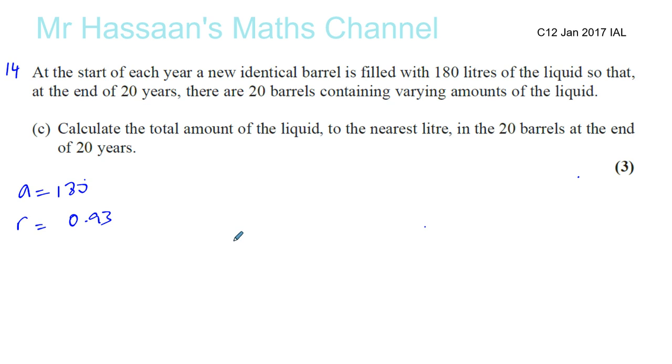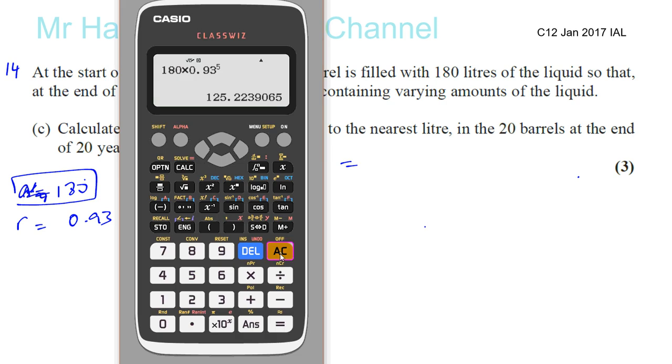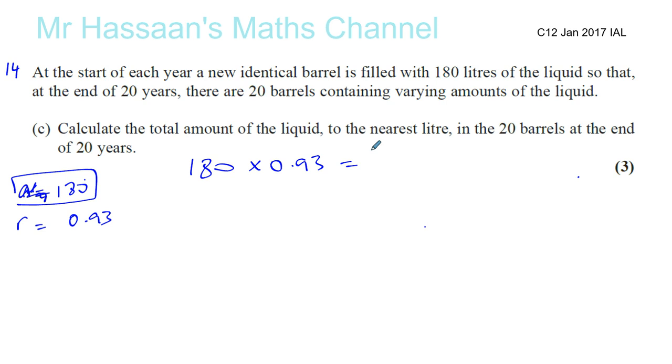Again, we've got to be a bit careful. We know that the first barrel, this is the beginning of the first year. I'm not going to call it A here. I'm going to change this slightly. At the beginning of the first year, there's 180 litres in the first barrel. By the end of the first year, that barrel will have 180 times 0.93 litres of liquid. So let's just do that, 0.93 times 180. That gives us 167.4 litres.